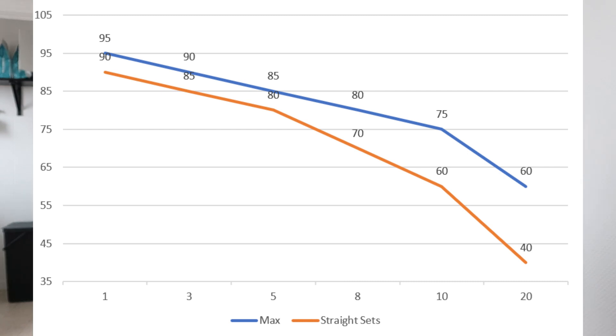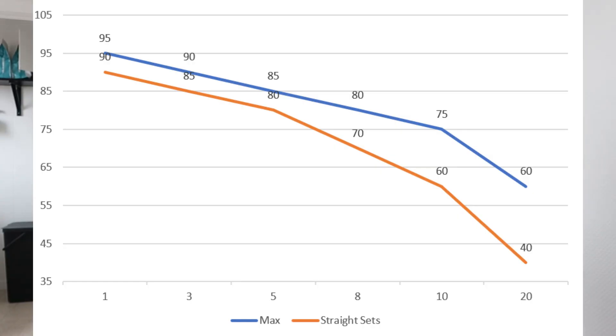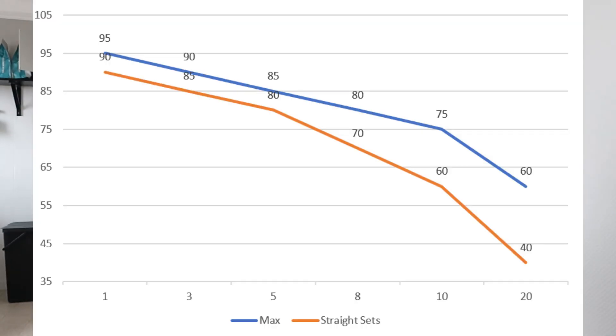A few things you can notice immediately: the percentage for your top set is going to be higher than for straight sets because you have to account for accumulated fatigue, and as reps increase intensity decreases. Something very important to notice is that going from singles to triples to sets of five you don't lose that much intensity. But as you go beyond fives you have to drop intensity a lot more, and the difference between your max top set and straight sets becomes a lot greater.